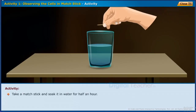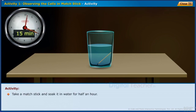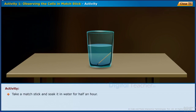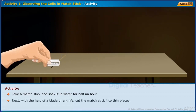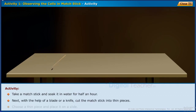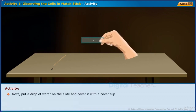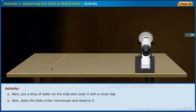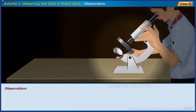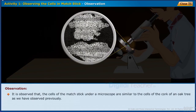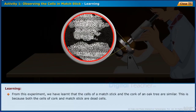Take a mat stick and soak it in water for half an hour. With the help of a blade or knife, cut the mat stick into thin pieces. Choose a thin piece, place it on a slide, put a drop of water on the slide, and cover it with a cover slip. Place the slide under a microscope and observe it. The cells of the mat stick under a microscope are similar to the cells of the cork of an oak tree, because both are dead cells.